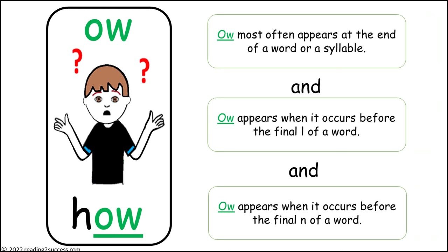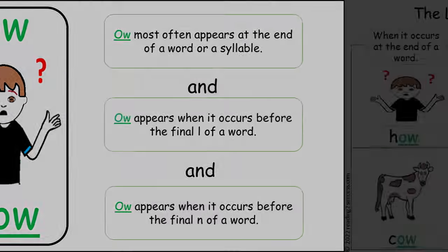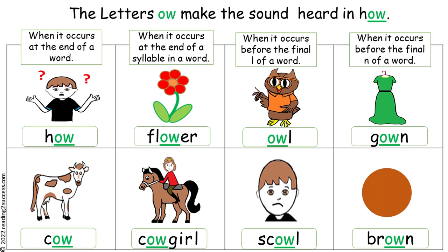These are three tips kids can use to help them determine when to use O-W. The first tip has two parts. Part one: use the letters O-W when the sound 'ow' occurs at the end of a word, as in 'how' and 'cow.' And part two: when it occurs at the end of a syllable in a word, as in 'flower' and 'cowgirl.'